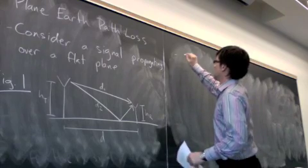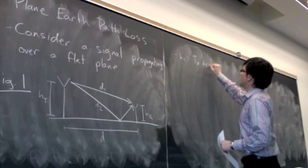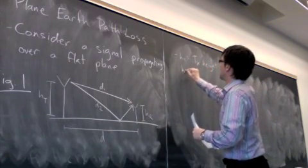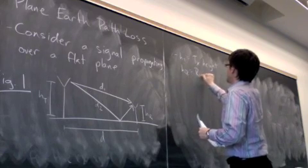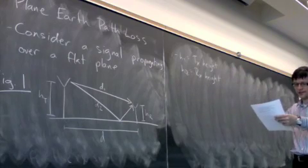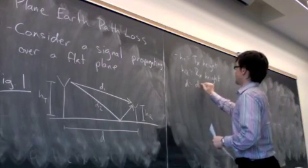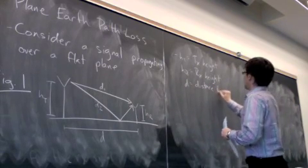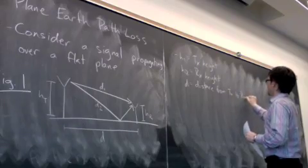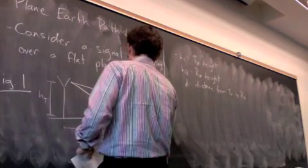So let me write that down for you. The parameters are ht, which is transmitter height, hr, which is the receiver height, both of these are the antenna heights. d is the distance from transmitter to receiver. There's one other parameter that I'll include, that is r.